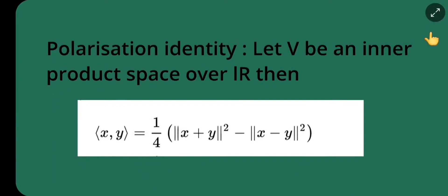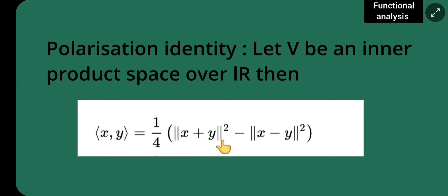In today's lecture, I will be doing the polarization identity. Let V be an inner product space over ℝ. Then, the inner product of x, y is equal to 1 upon 4 in the bracket: norm of x plus y the whole square minus norm of x minus y the whole square. This is the polarization identity and I have to prove this now.